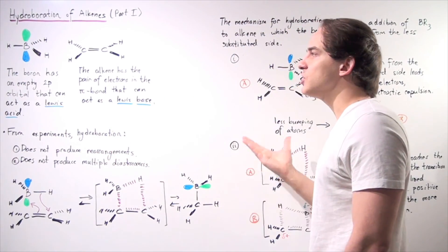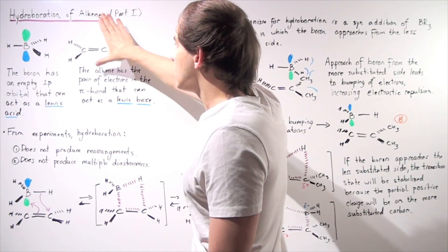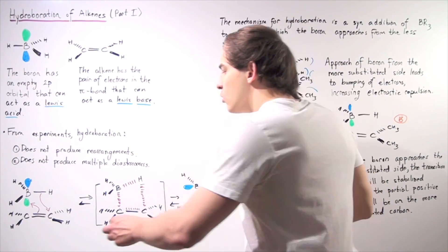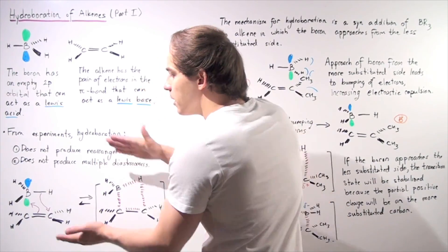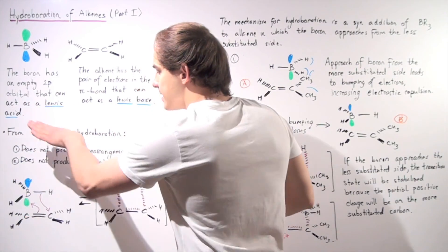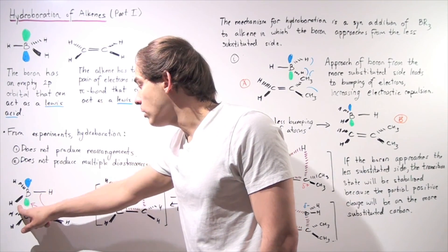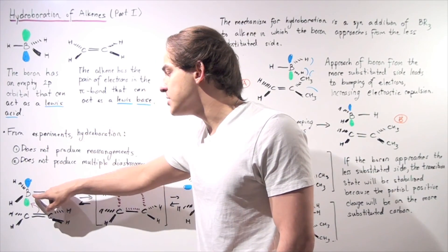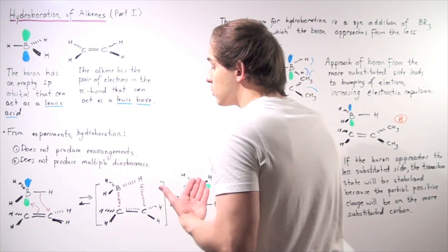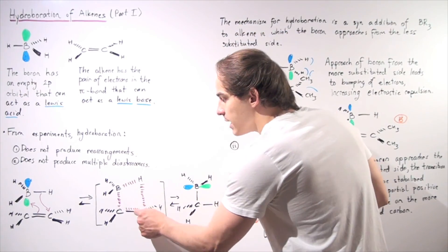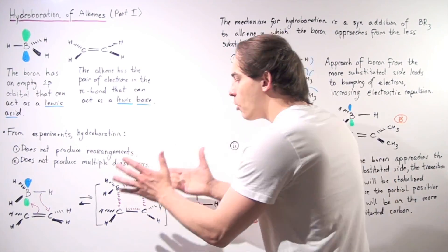Let's devise our mechanism — what is actually going on between the boron's empty 2p orbital and the filled pi bond, our Lewis acid and Lewis base. We have a one-step mechanism in which we have a transition state and addition from the same side — syn-addition. The pi bond interacts with this open, empty 2p orbital, and at the same time the pair of electrons in the bond between the boron and H breaks off and goes onto this carbon. Our transition state has the pi bond and the B–H bond partially broken, while the B–C and C–H bonds are partially formed.